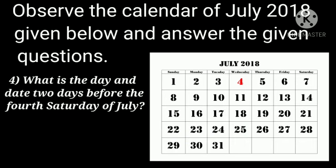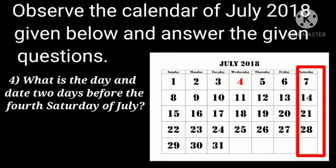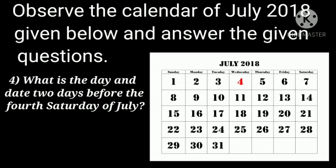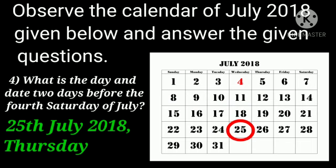What is the day and date 2 days before the 4th Saturday of July? First, let us find out the date of the 4th Saturday, which is 28th July. Two days before means we move 2 days back, so the answer is 26th July 2018 — wait, that is 25th of July 2018, which is a Thursday.